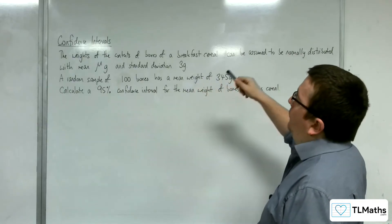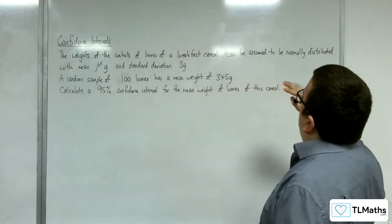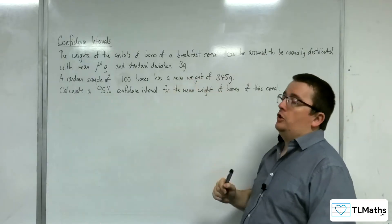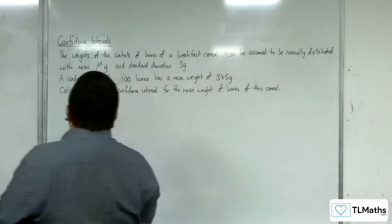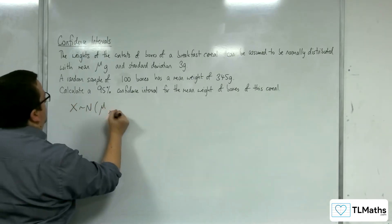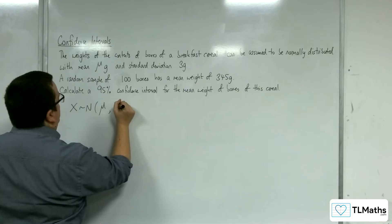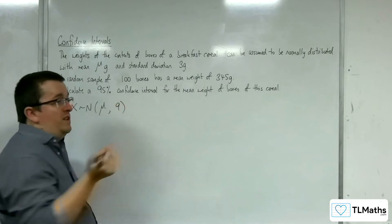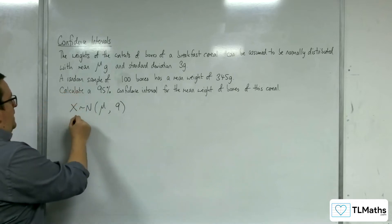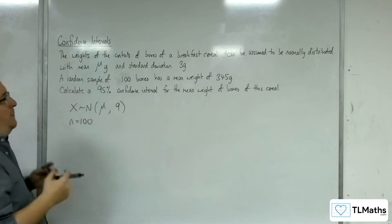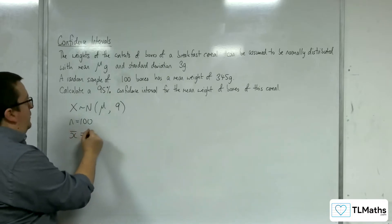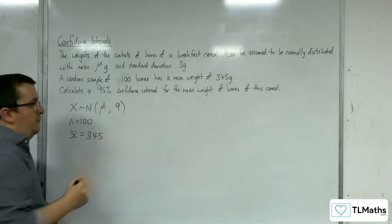The weights of the contents of boxes of a breakfast cereal can be assumed to be normally distributed with a mean mu grams and a standard deviation of 3 grams, so that would be a variance of 9. A random sample of 100 boxes, so n is 100, has a mean weight of 345 grams, so x bar is 345 grams.